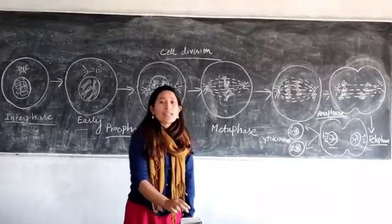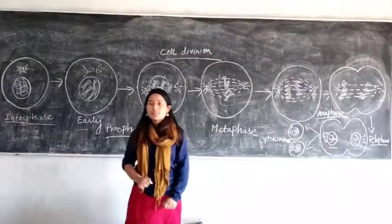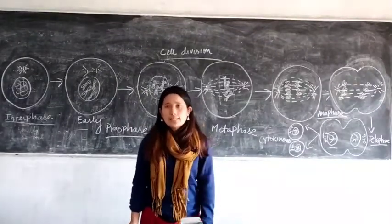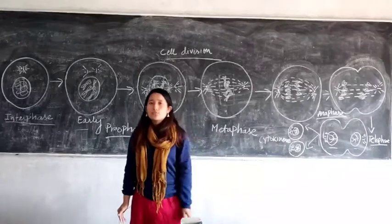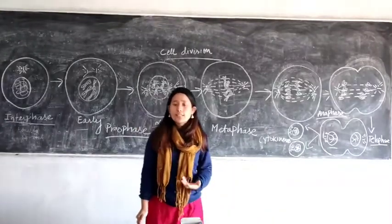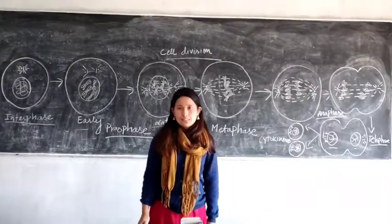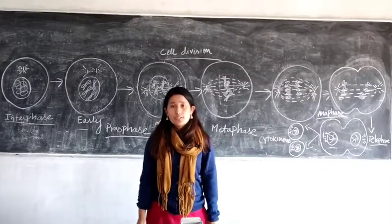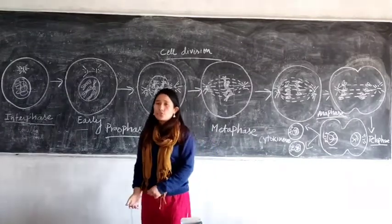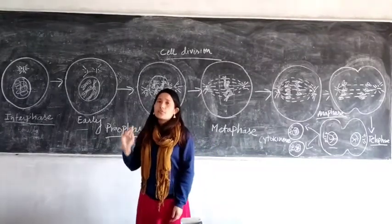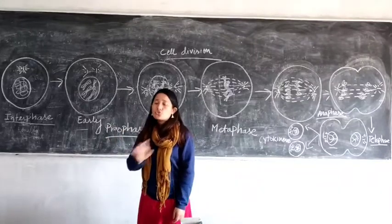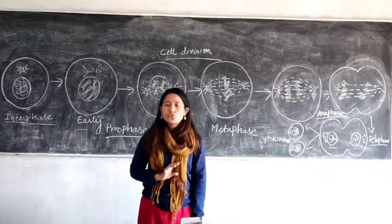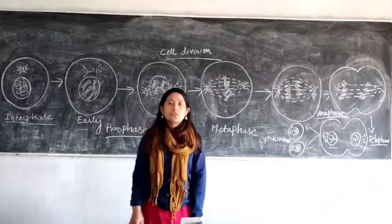Here we sum up Chapter 2: Structure of Chromosome, Cell Cycle and Cell Division. In our next class, we will start the next and last chapter, that is genetics, and we will be discussing Mendel's experiments. Go through this topic from your book and go through the diagrams properly — you will be asked diagram-based questions, so do not skip any diagram. Thank you.